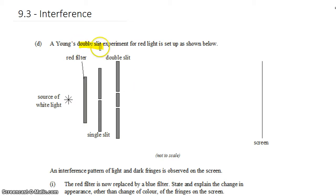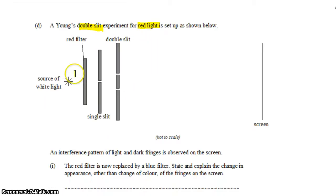So we have a double slit and red light shown below. We get the red light from a source of white light which passes through a red filter and then it goes through a single slit so that the light is coherent. Then the light spreads out due to diffraction, passes through the double slit and we can observe on the screen our double slit interference pattern which we expect to look something like this.